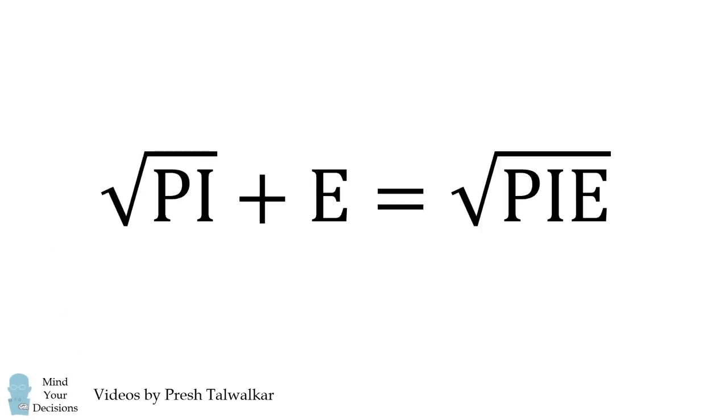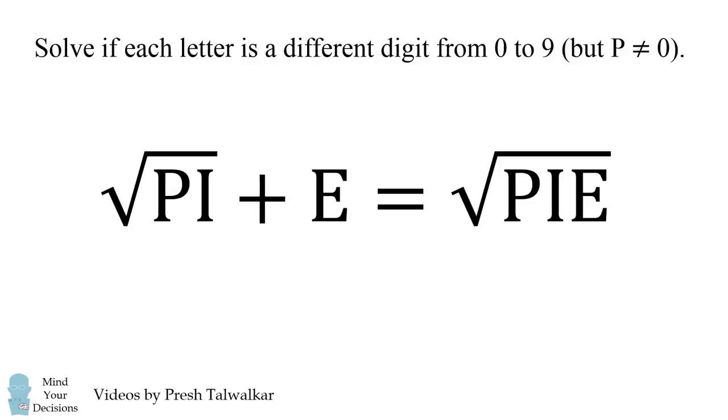The square root of PI plus E is equal to the square root of PIE. Solve if each letter is a different digit from 0 to 9, but P is not equal to 0.